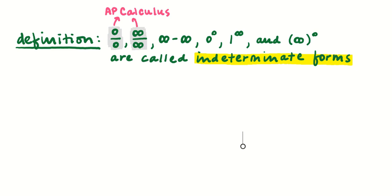But maybe you're interested in: what does infinity minus infinity look like? Why is that not 0? What about infinity to the 0? Why is that not 1? I thought everything to the 0 was 1. You've already seen that infinity to the 0 is not always 1, because that's the same as infinity over infinity. So let's look at some indeterminate forms that aren't the typical AP calculus ones.